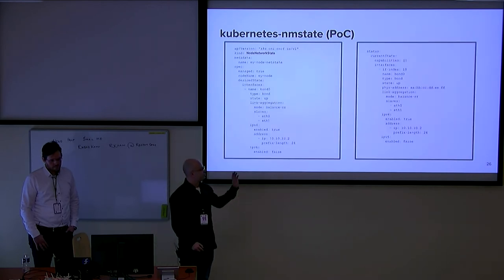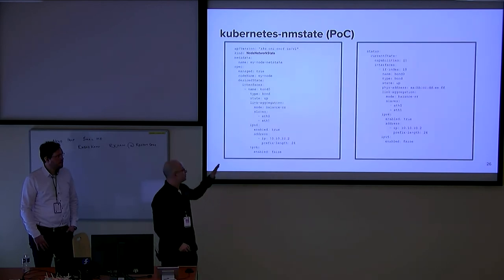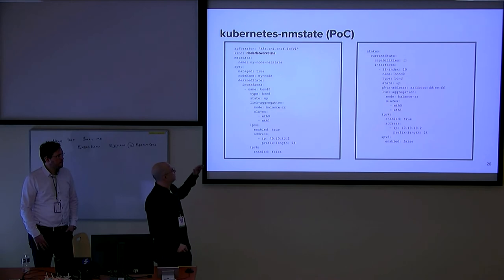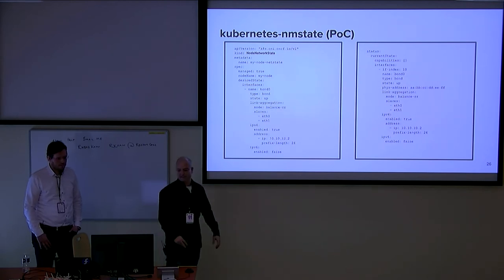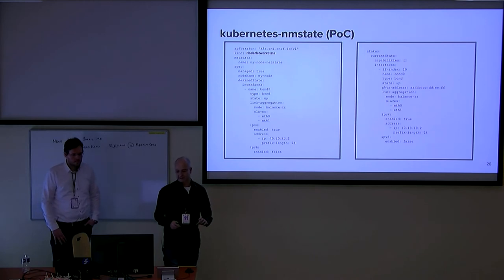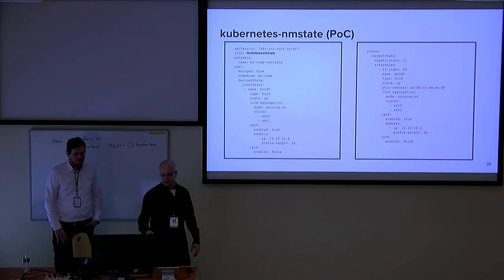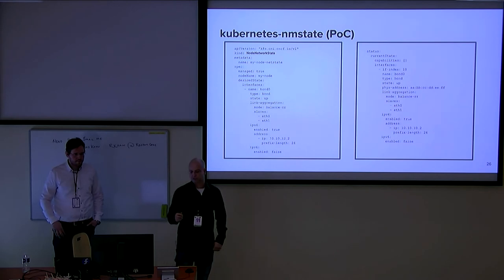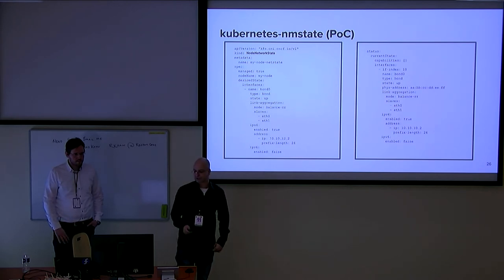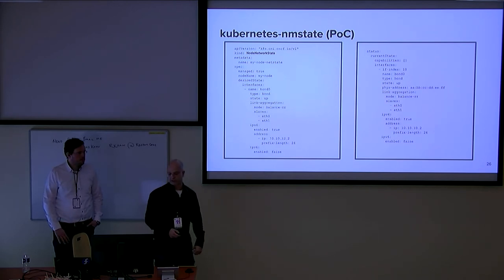This is an example of the CRD and how it looks. The beginning is some Kubernetes boilerplate, and the rest is very similar to what we saw earlier — it maps almost identically to the NM state schema.